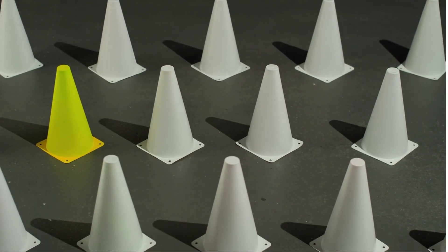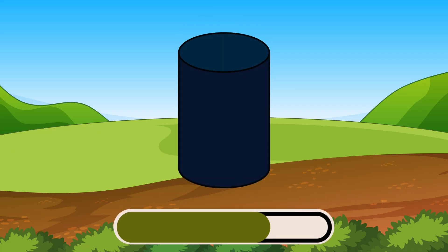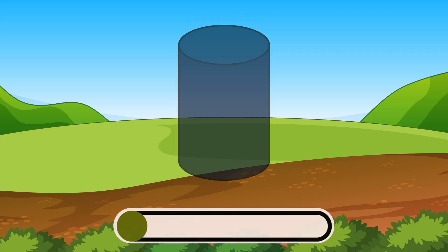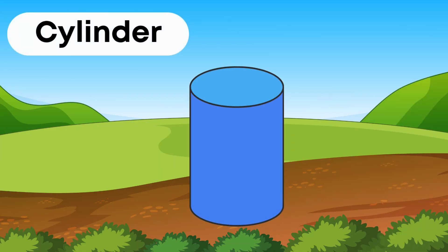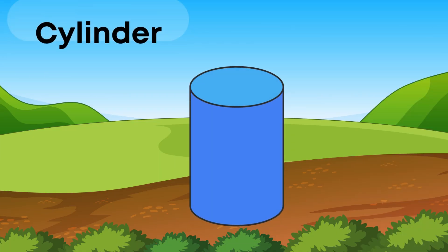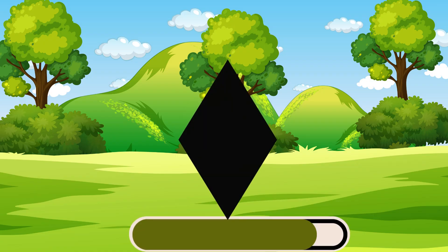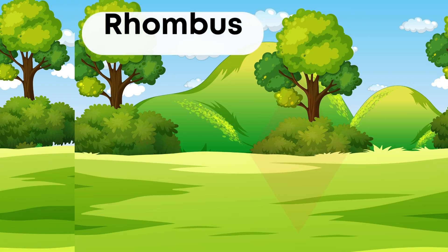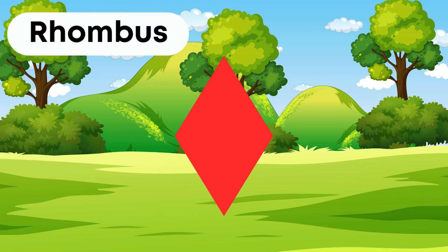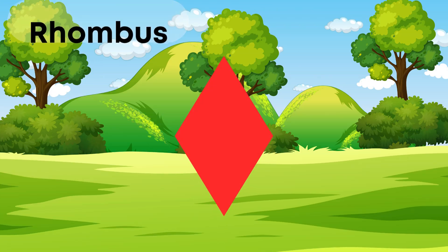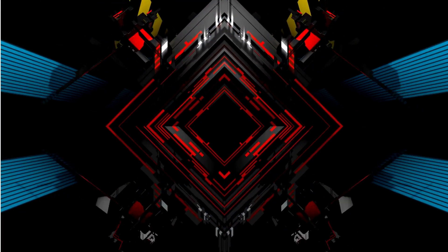Which shape is this? This is a cylinder. Cylinder. Which shape is this? This is a rhombus. Rhombus.